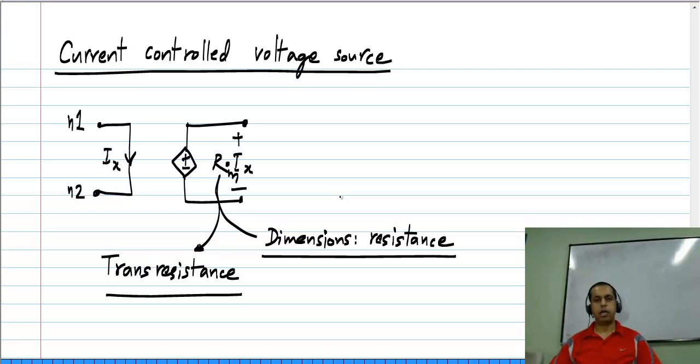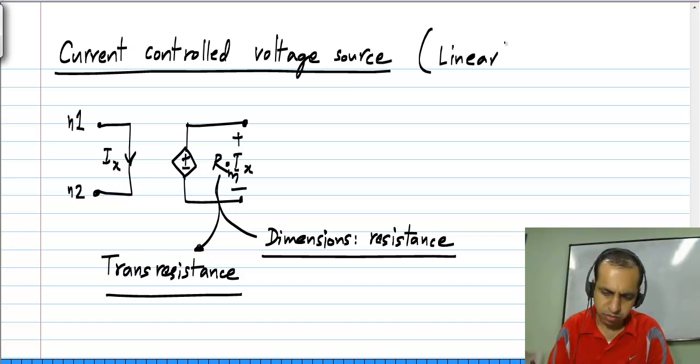The relationship Rm times Ix tells you that it is linear. This is indeed linear and what does this mean?